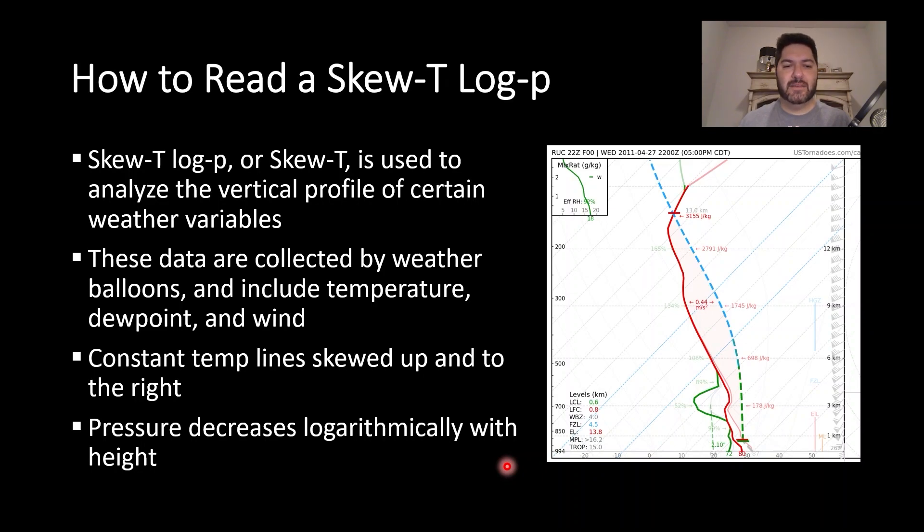The constant temperature lines are skewed up and to the right - that's the Skew-T part of it. And the Log-P is that pressure decreases logarithmically with height. So, Skew-T Log-P.